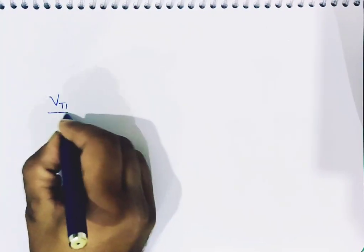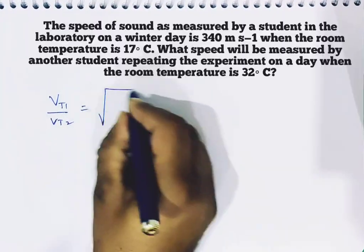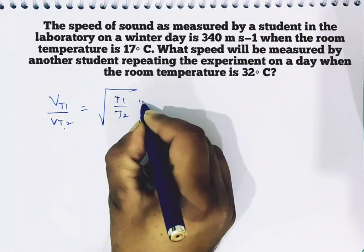We know that v(T1)/v(T2) equals the square root of T1/T2. The temperatures should be in Kelvin.